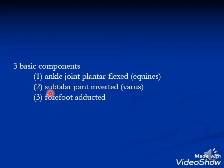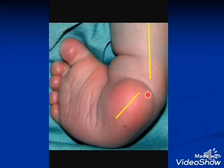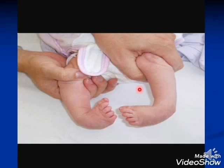Three basic components: the ankle joint is in equinus (plantar flexed), the subtalar joint is inverted in varus, and the forefoot is adducted. As shown in the pictures, the ankle joint is in equinus, subtalar joint in varus, and forefoot in adduction. This is bilateral idiopathic club foot showing the severity of the condition on both sides.